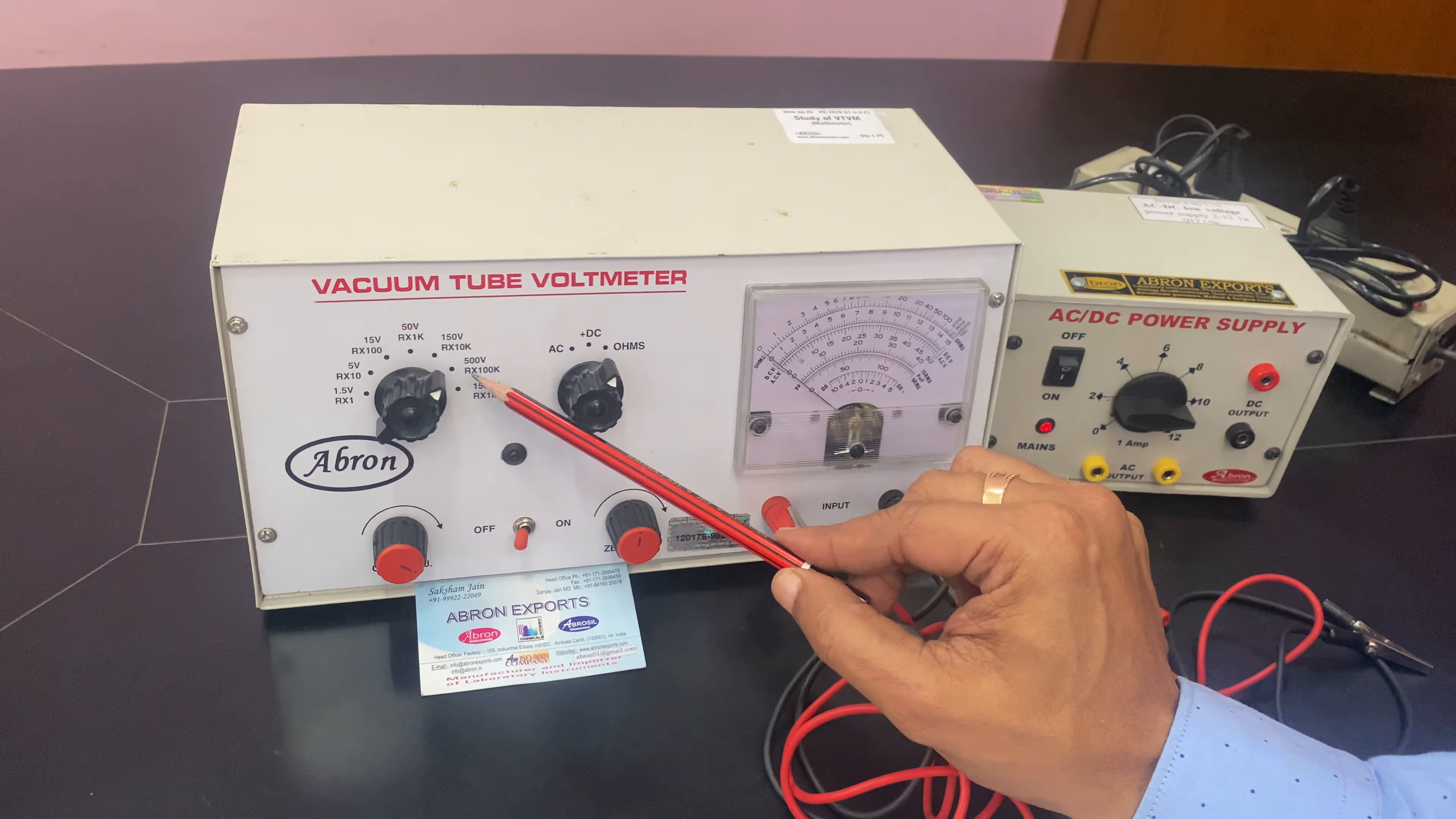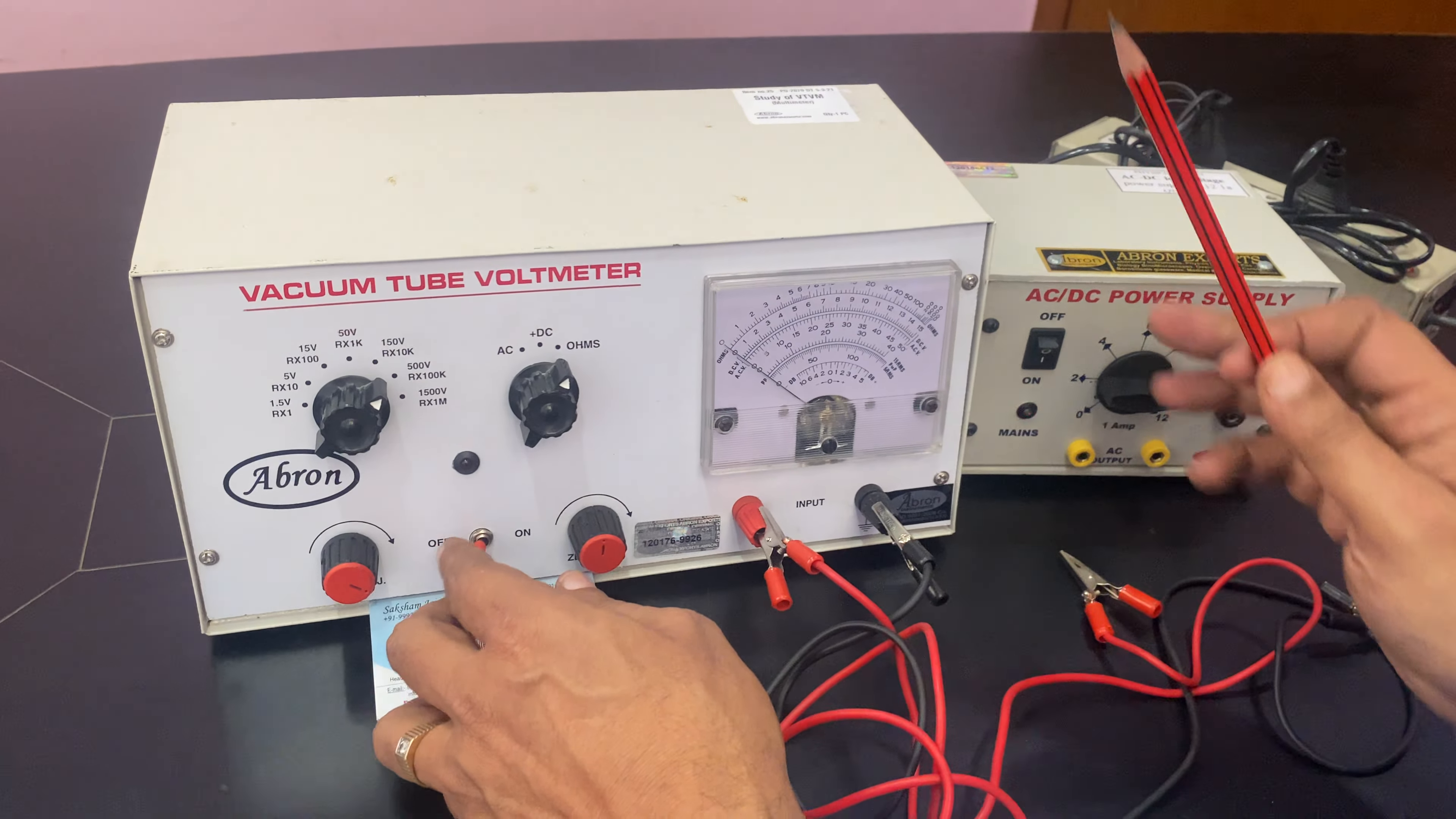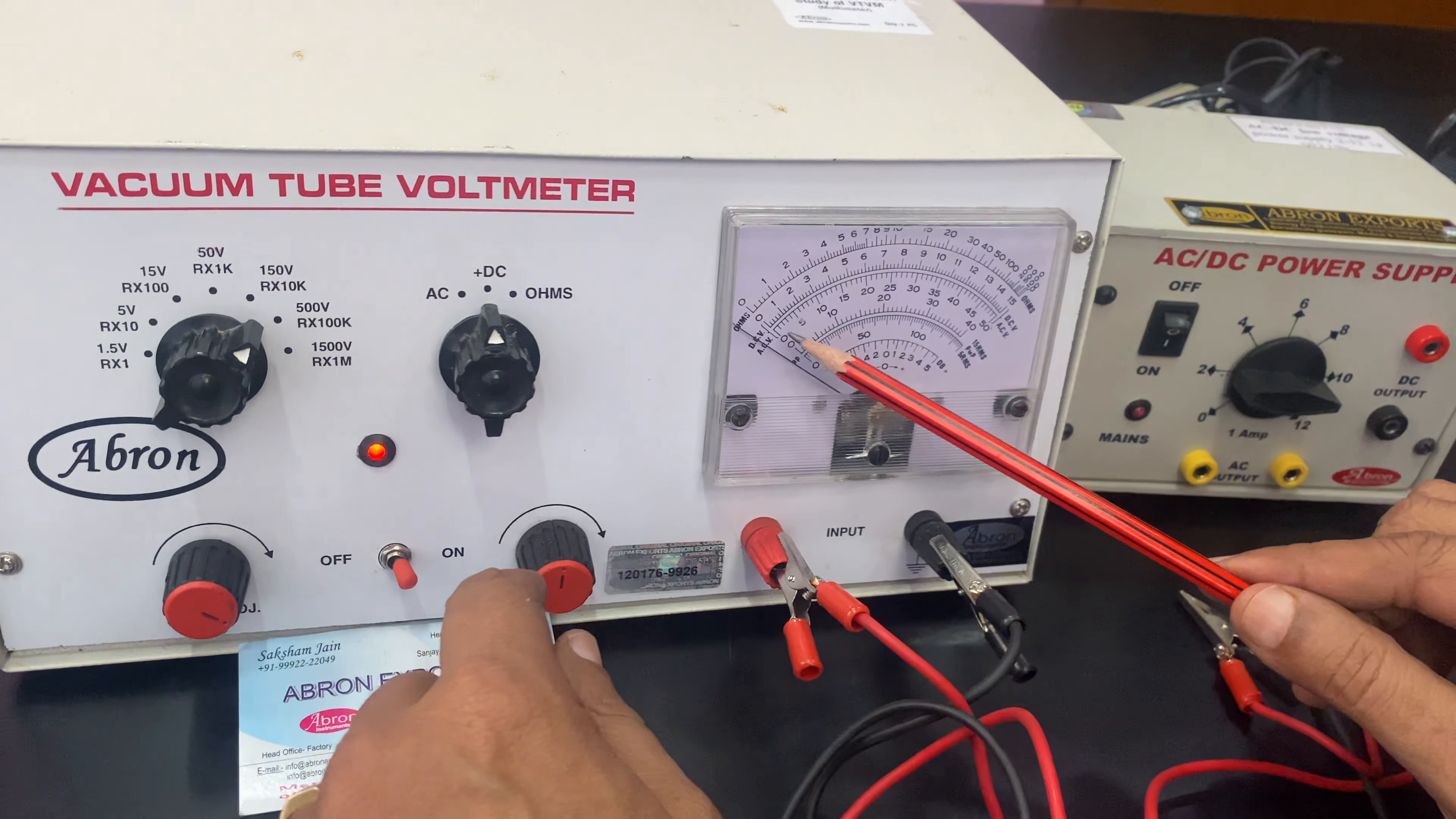First of all, you have to switch on the instrument. Let's say I want to measure DC voltage. This scale is there. We have to adjust. This is the DC and AC scale.